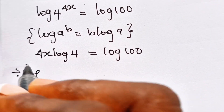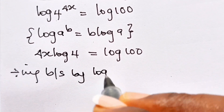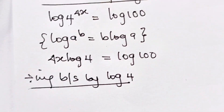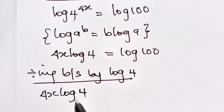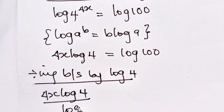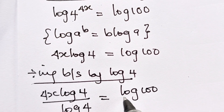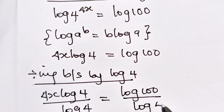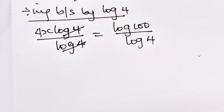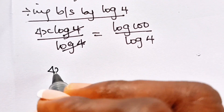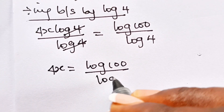So we can write this as 4x log 4 is equal to log 100. Dividing both sides by log 4, we have 4x log 4 divided by log 4 equal to log 100 divided by log 4. The log 4 cancels, so we have 4x equals log 100 divided by log 4.